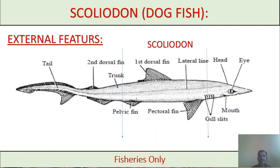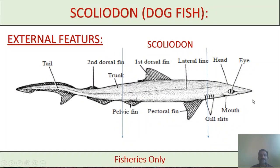Now let us discuss the external characters or external features of the Scolidon species. The size of Scolidon is one to two feet, that is 30 cm to 60 cm. The shape is spindle-shaped, meaning the front side is pointed or slightly blunt and the tail side is similarly tapered.